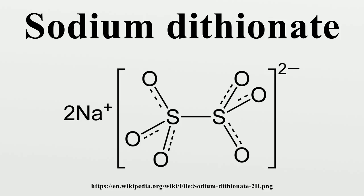Na2SO3 + 2 Ag+ → Na2S2O6 + 2 Ag. Another method is via oxidation of sodium thiosulfate with chlorine: 3 Cl2 + Na2S2O3·5H2O + 6 NaOH → Na2S2O6 + 6 NaCl + 8 H2O. Another method is treating sodium thiosulfate with sodium hypochlorite solution.